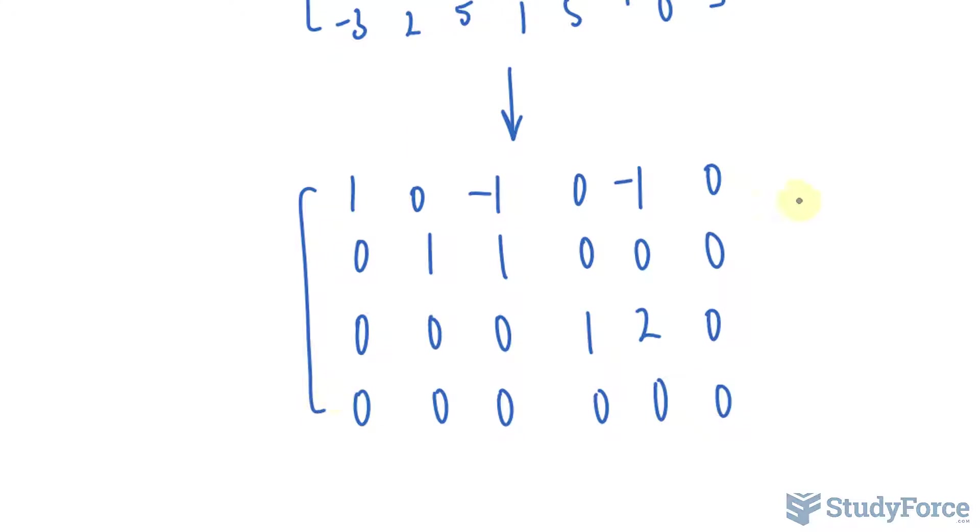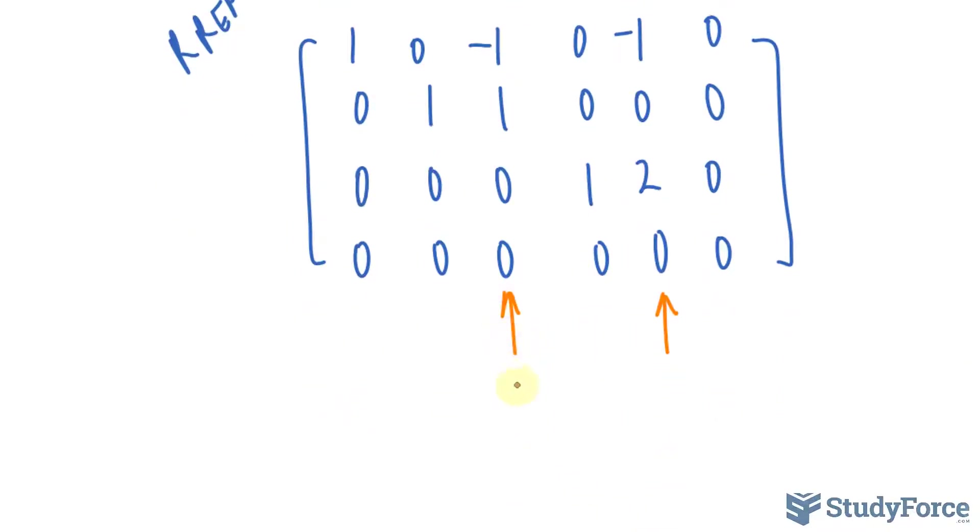Okay, at this stage, once you have created your new matrix, you have to look for columns within this matrix that don't have a leading one. I can see that this column does not have a leading one and neither does this one. So, column 3 and 5 will serve as our parameters. I'm going to call this t and I'll call this s.